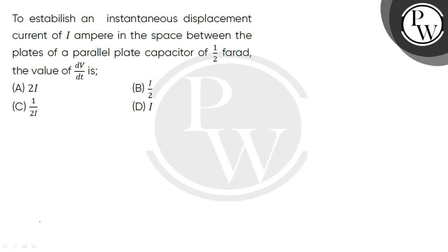Hello, let's read the question. To establish an instantaneous displacement current of I ampere in the space between the plates of a parallel plate capacitor of half Farad, the value of dv/dt is? We have the instantaneous displacement current of I ampere in the space between the plates of a parallel plate capacitor, and the capacitance value of half Farad.